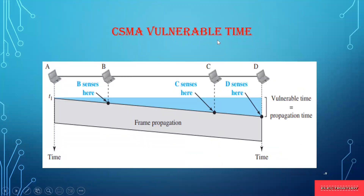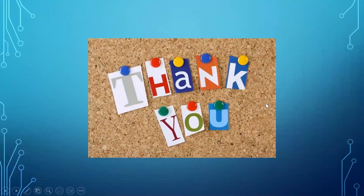The vulnerable time is the length of time during which a collision can occur. Under CSMA, the vulnerable time is equal to the propagation time, because each station senses and sends at different times, so frames from different stations will eventually collide. Hope you have understood this concept. There are two more concepts under CSMA — CSMA/CA and CSMA/CD — which will be covered in the next video. Thank you.